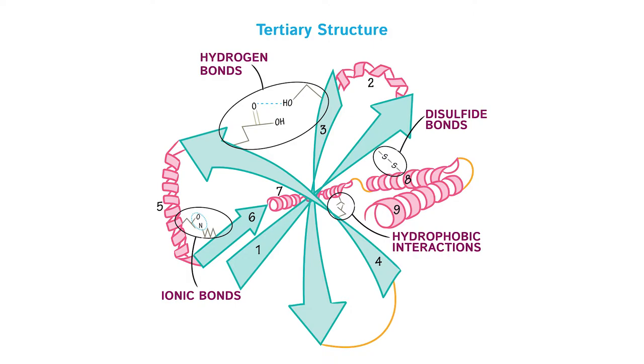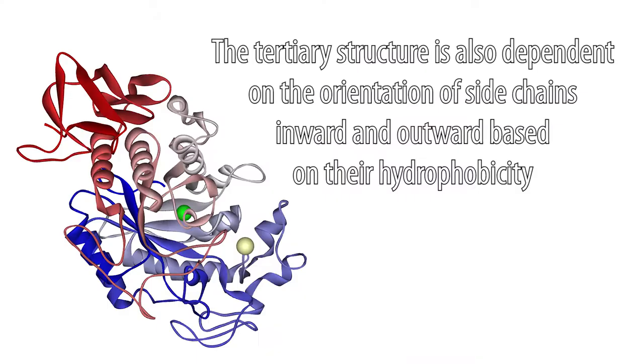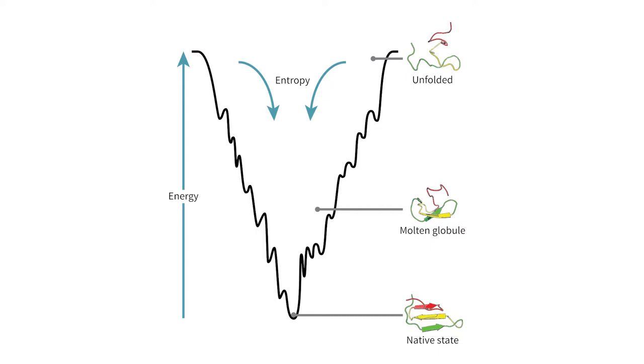The tertiary structure is determined primarily by the interactions of the amino acid side chains, which contribute to hydrogen bonding, disulfide bridges, and ionic bonding. The tertiary structure is also dependent on the orientations of hydrophobic and hydrophilic side chains inward and outward from the protein, respectively.